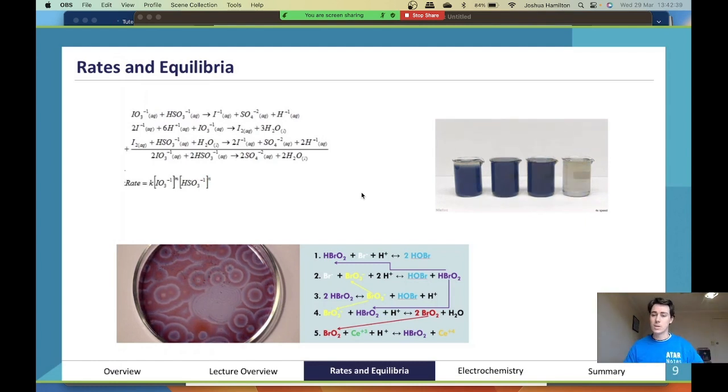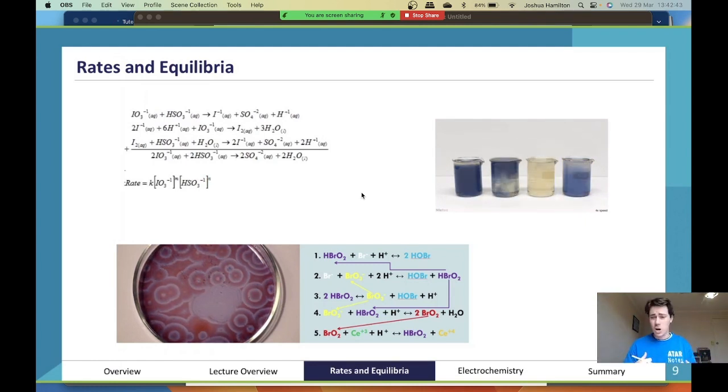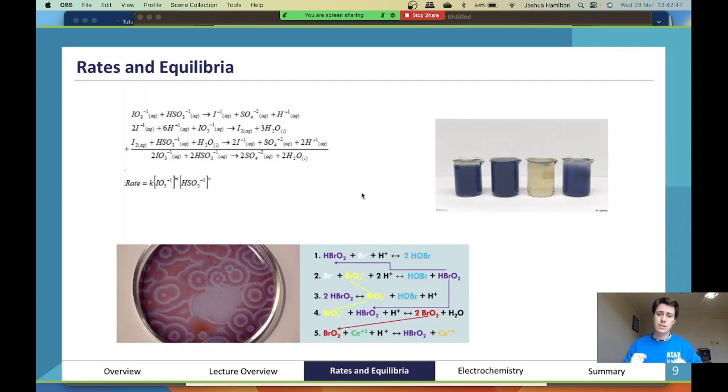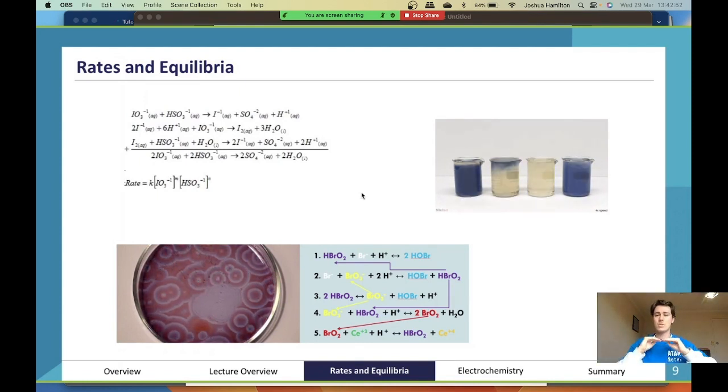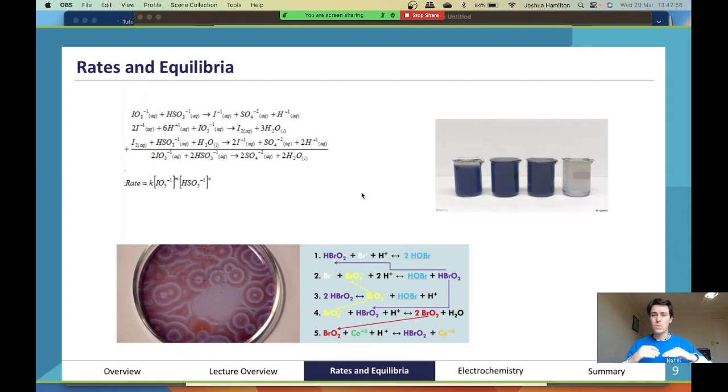When we get really cold, we shiver, and the shivering makes the muscles move and the muscles end up heating up the inside of the body. Same sort of thing—we'd love to stay at that constant 37 degrees, and that equilibrium is all coming from homeostasis.